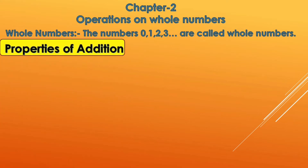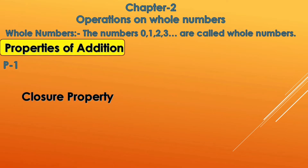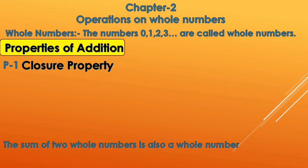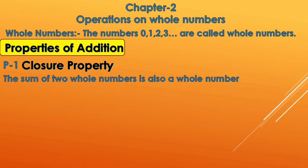First we'll go ahead with the properties of addition. The first property is closure property. This means that when you add two whole numbers, the answer is also a whole number. That means the sum of two whole numbers is also a whole number. For example, 2 and 3 are both whole numbers and 2 plus 3 equals 5, which is also a whole number.